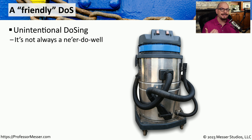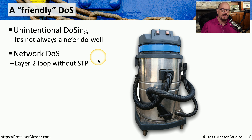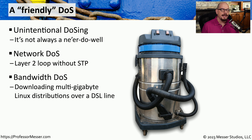Sometimes we create a denial of service to ourselves. This can be easily done if you aren't paying attention. For example, you may be plugging in two switches to each other, and then you plug those two switches into each other again, which effectively creates a loop. And if you're not running spanning tree, then you've probably brought down that particular part of the network, creating a denial of service.